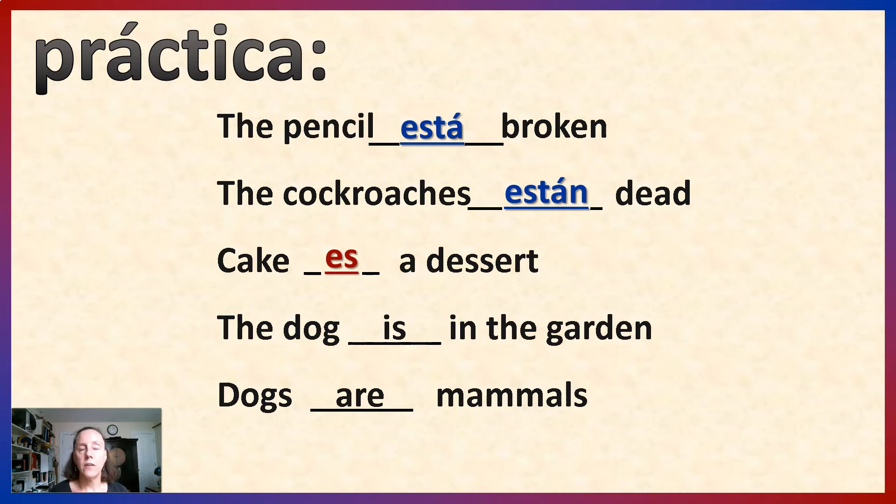The dog is in the garden. This is where it is. Therefore, está. Dogs are mammals. This is not where it is, how it is, or condition. Therefore, los perros son mamíferos.